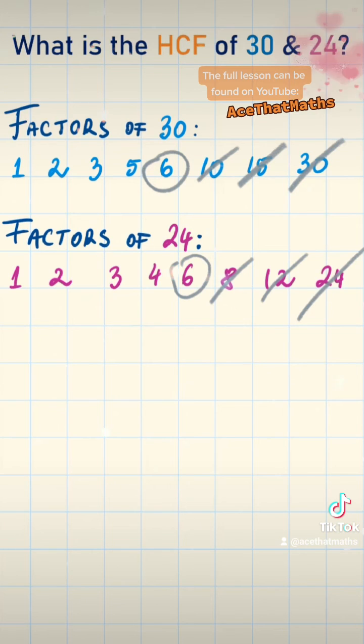We can see that 6 is the highest number that is the same in both lists. So 6 is the highest common factor.